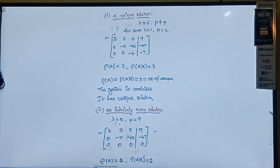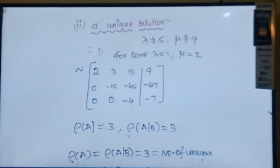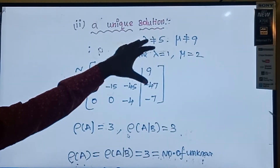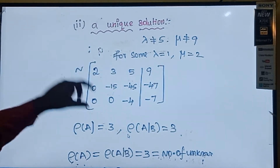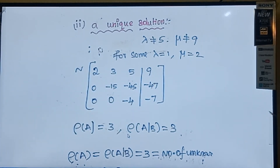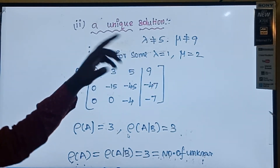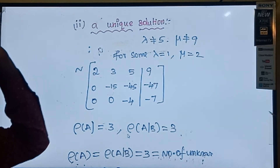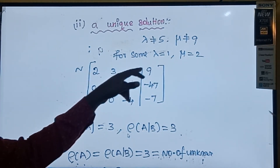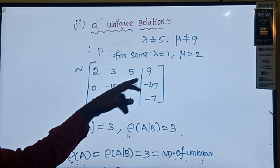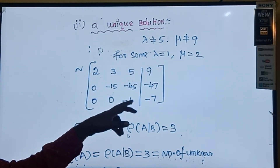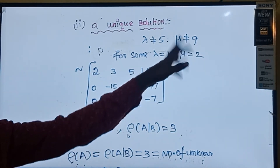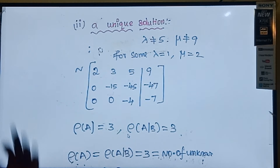For the unique solution case: lambda ≠ 5 and mu ≠ 9, because lambda-5 ≠ 0 and mu-9 ≠ 0. I am taking lambda=1 and mu=2. Substituting: the matrix becomes [2, 3, 5, 9], [0, -15, -45, -47], [0, 0, 1-5, 2-9] = [0, 0, -4, -7].